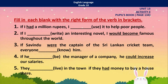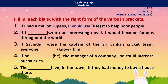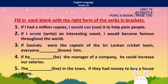Why don't we move into some activities now? I think our children would be able to do it easily. I have taken this from your pupil's book, page 134, unit 13, activity 5. Fill in each blank with the right form of the verb in brackets. Please take out your books so you can do this while we are discussing. 'If I had a million rupees, I blank used to help poor people.' — 'If I had a million rupees, I would use it to help poor people.' 'If I blank write an interesting novel, I would become famous throughout the world.' — 'If I wrote an interesting novel, I would become famous throughout the world.'